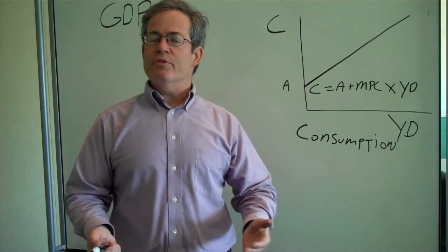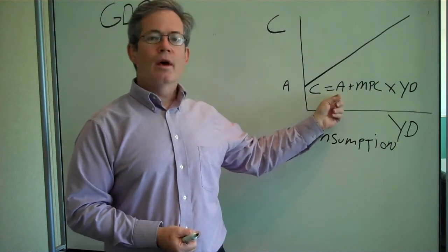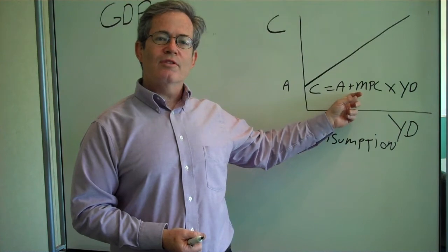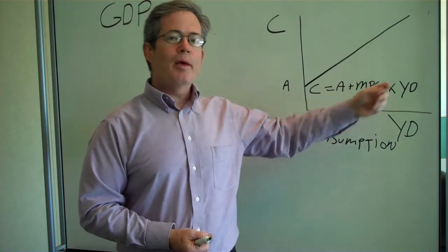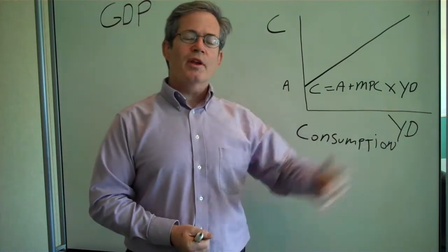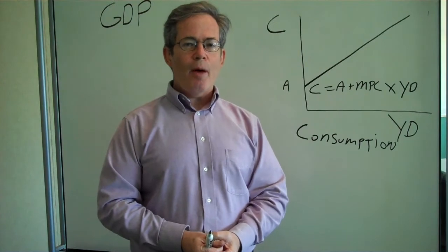Last time we talked about the consumption function. Remember that consumption is equal to autonomous consumption plus the marginal propensity to consume, MPC, times disposable income. So when disposable income goes up, planned consumption goes up. How much you want to buy goes up.